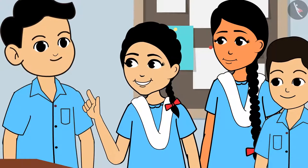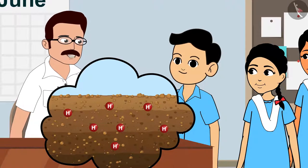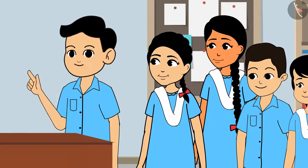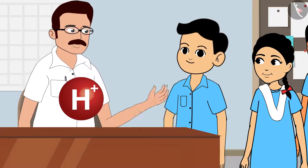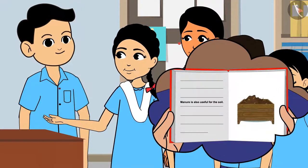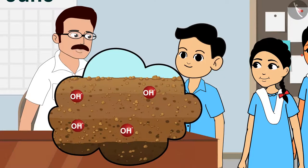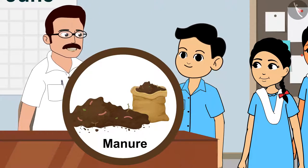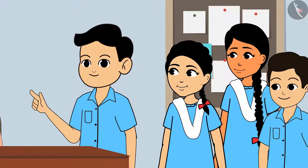Sir, where else does neutralization help? Sometimes, due to the increase in hydrogen ions in soil, the acidic content of the soil increases. This happens when fertilizers are used in large quantities. Will it affect crop production? Yes — the soil should not be too acidic or too basic. When the soil is acidic, lime is used to reduce it. Sir, I had read that manure is also useful for the soil. Yes children, when the soil becomes alkaline, manure is used. The organisms living in the soil make it acidic, which makes the soil good for crops.